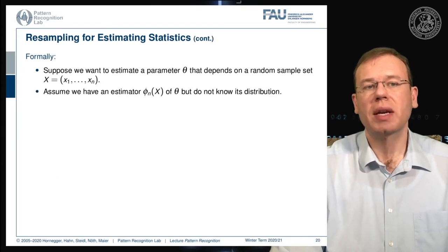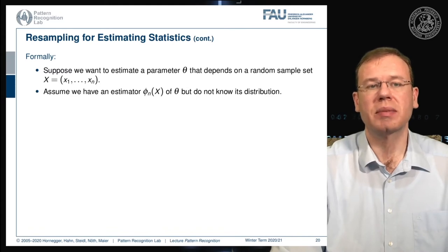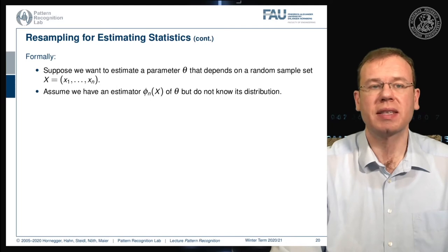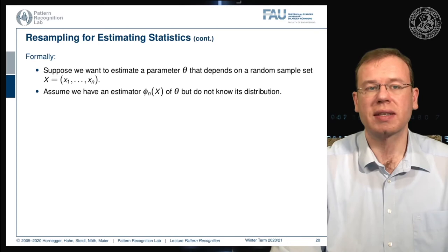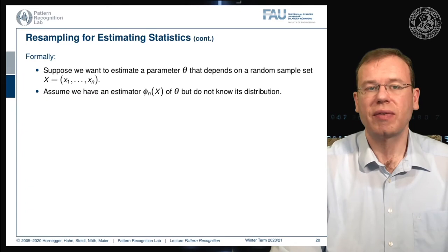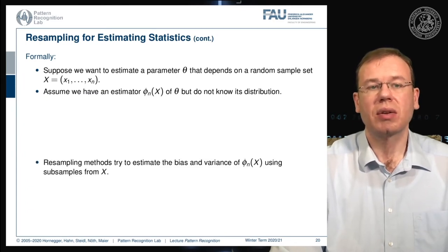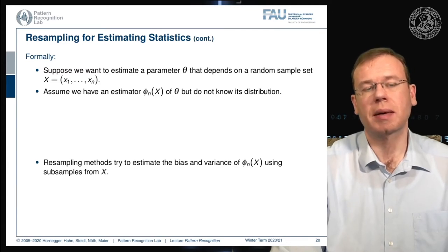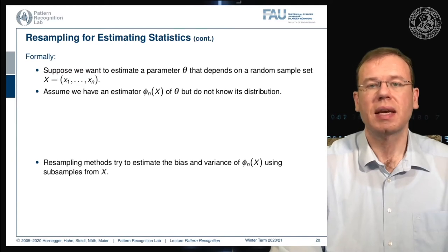Formally, we can express this as follows: suppose we want to estimate a parameter vector theta that depends on a random sample set x ranging from x1 to xN. We can assume that we have an estimator of theta but we do not know its distribution. The resampling methods try to estimate the bias and variance of this estimator using subsamples from x.